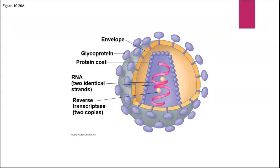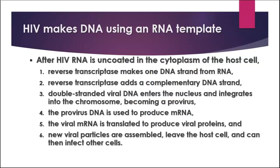Here's a diagram of HIV. There is an envelope with glycoproteins on the surface. The capsid on the inside is roughly tetrahedral in shape, and there are two identical strands of viral RNA along with two copies of the reverse transcriptase enzyme. When HIV attaches to the cell, the reverse transcriptase makes a single DNA strand from the RNA template, then adds a complementary DNA strand. That DNA strand gets into the nucleus, integrates into the chromosome as a provirus — similar to the prophage we discussed with bacteriophages — and then produces messenger RNA that is translated into proteins. New viral particles are assembled, leave the host cell, and can infect other cells.